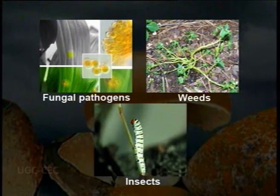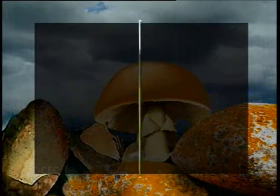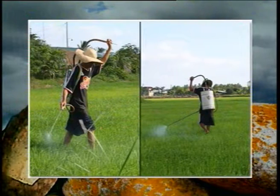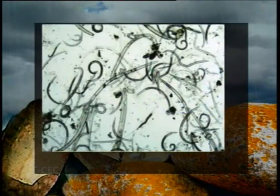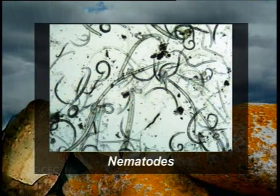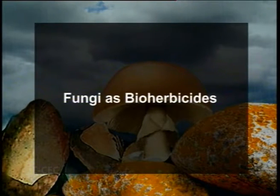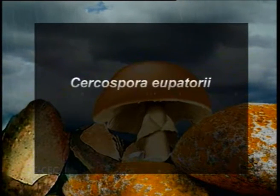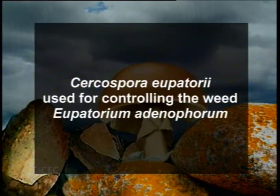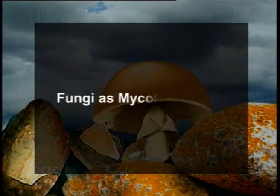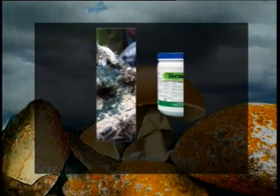Some fungi are used as biological control agents against plant pests, including fungal pathogens, weeds, and insects. Fungal spores are sprayed over diseased plants to kill pests; these are cheaper and more environment-friendly than chemical pesticides. They can also be used against soil-borne pathogens like nematodes. Fungi can also be used as bio-herbicides (microbial weed killers) — for example, Cercospora upetori can be used for control of the weed Eupatorium adenophorum. Several fungi also produce toxins to kill pathogenic fungi; for example, Trichoderma lignorum inhibits the growth of root rot fungus.